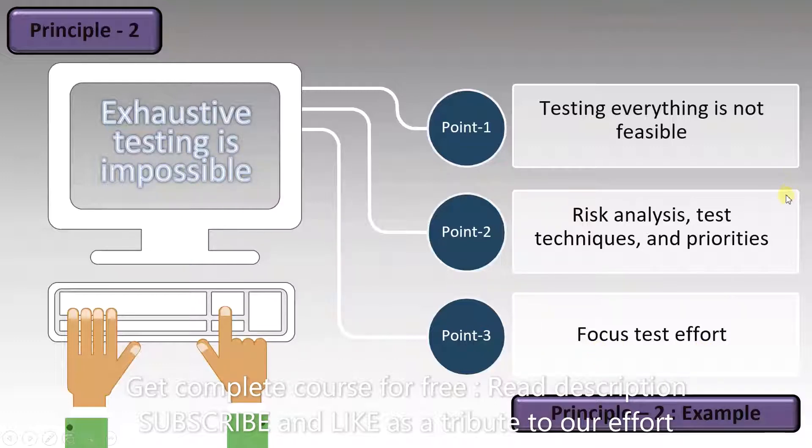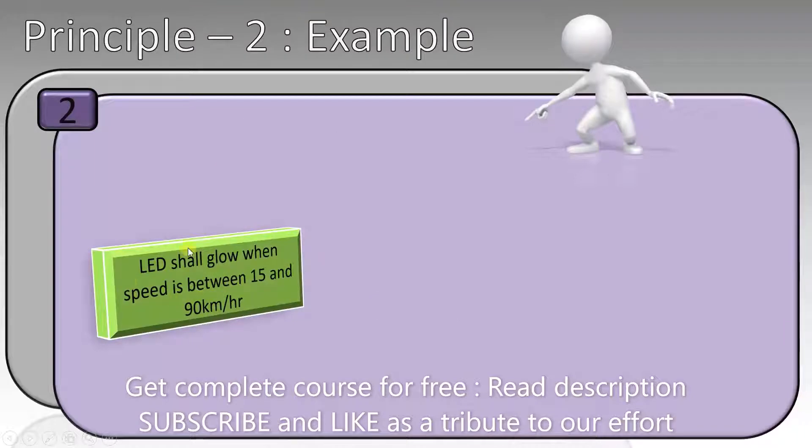Let's use an example here. Say a customer's requirement is the following: LED shall glow when speed is between 15 and 90 kilometers per hour. So there is an LED that will only glow when the speed is between 15 and 90.